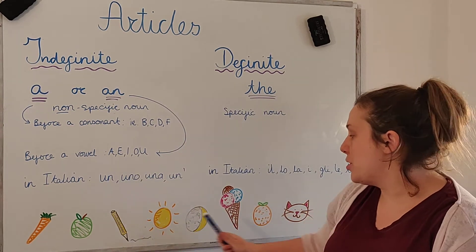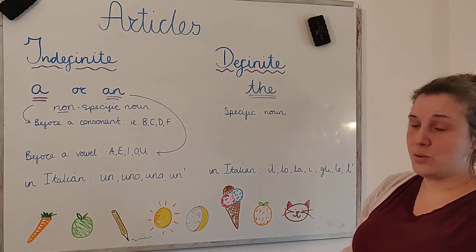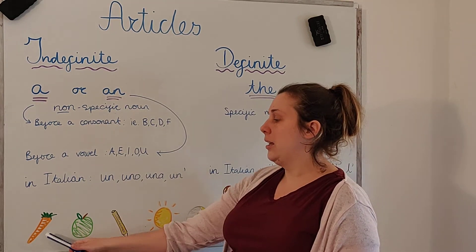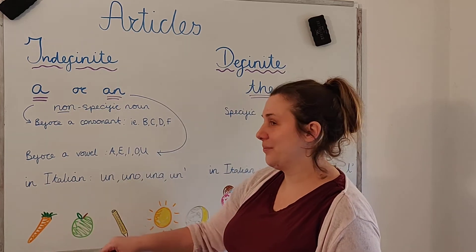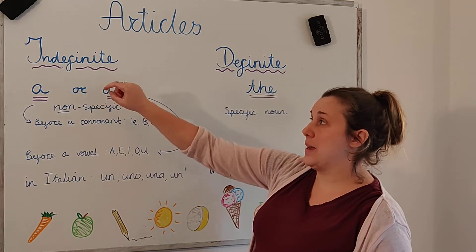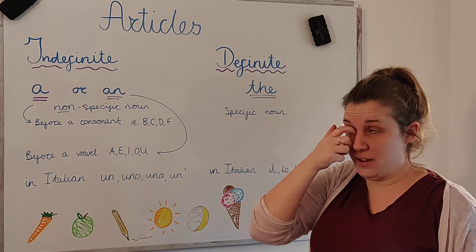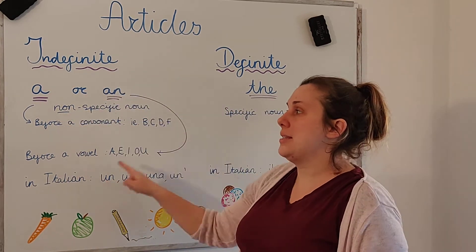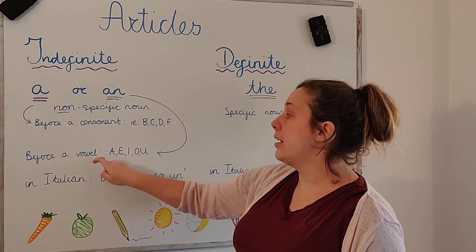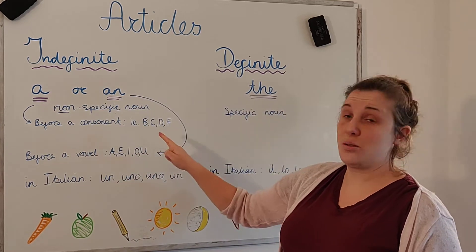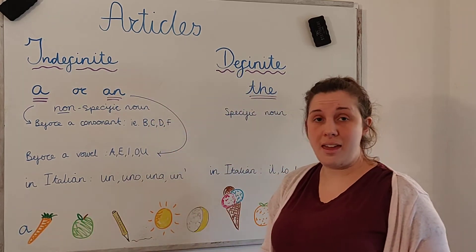Okay, let's do a little recap. I've put some examples here. Let's see if we can figure out together which article we would have to put. So — carrot. Is it going to be indefinite or definite? Carrot is something non-specific, something quite general, so it's going to be indefinite. And carrot — does it start with a consonant or a vowel? It starts with a consonant, the letter C. So for carrot, we're going to put A. A carrot.